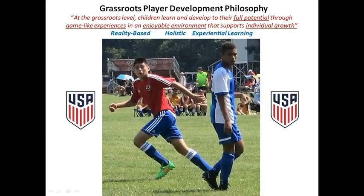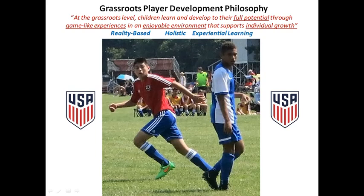We begin by reviewing the U.S. soccer grassroots player development philosophy. At the grassroots level, children learn and develop to their full potential through game-like experiences in an enjoyable environment that supports individual growth. We relate this statement to each of the three key ingredients that make Play Practice Play such a powerful learning environment for skill acquisition. Reality-based builds upon the idea that the game is the starting point and provides the context through the demands of the game for transforming technique into skill. Holistic describes the approach for getting to the heart of motivation for youngsters to play and meet their basic needs of fun and development.